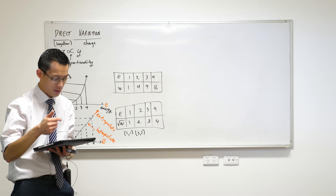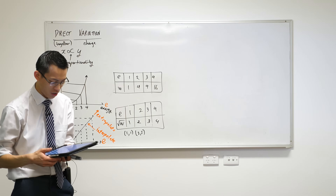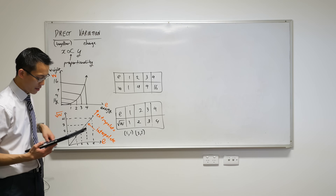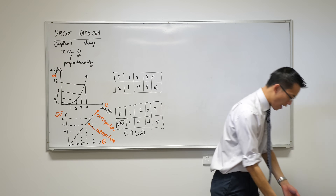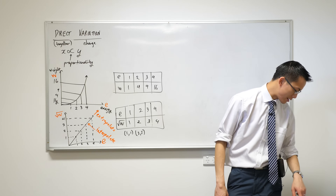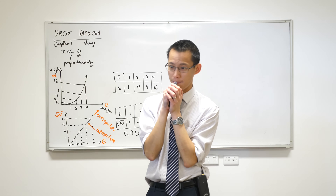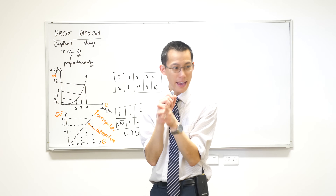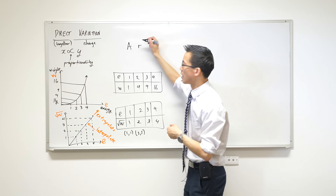Write the relationship between the variables using k as the constant of variation. We're going to do this two ways. Let's have a look at 1a — there are two variables. What are they? A and R. So I'm just going to write A and R.